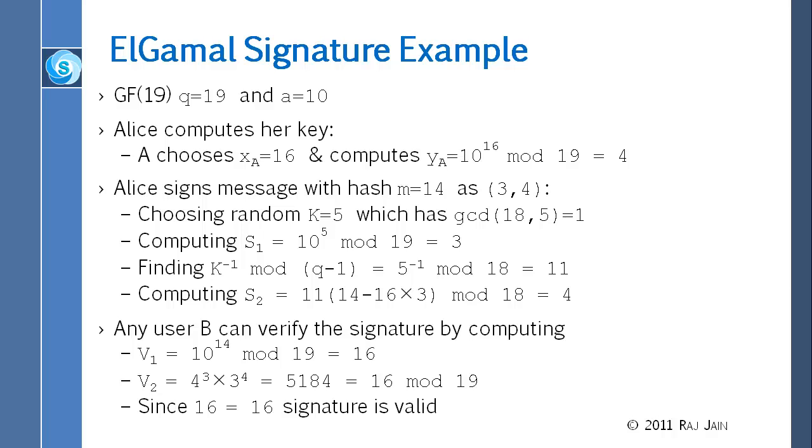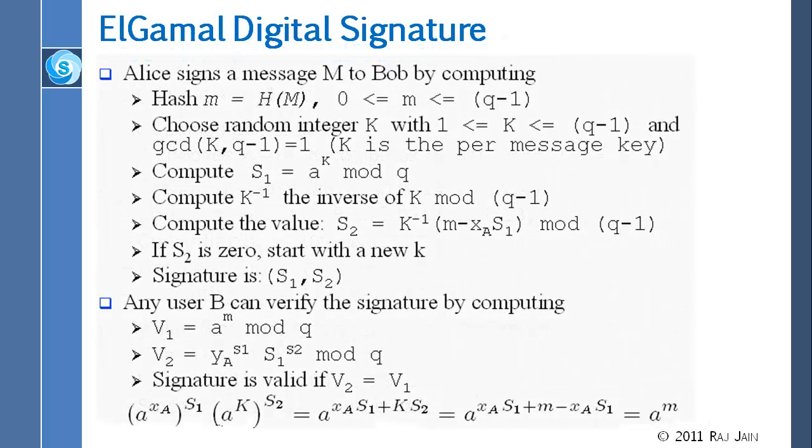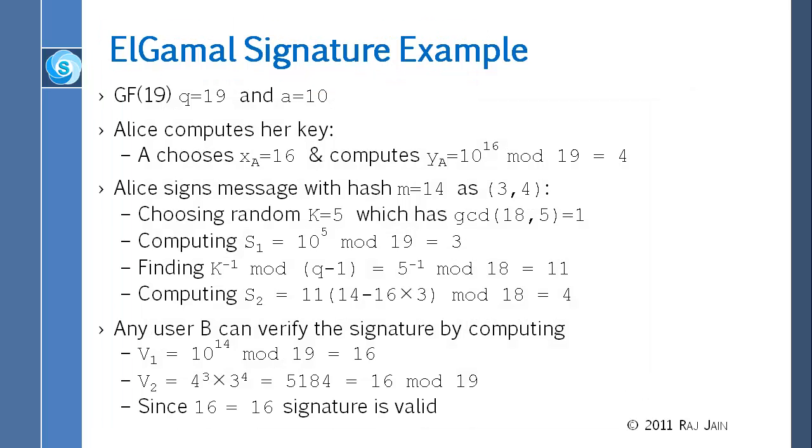Then to verify, you calculate V1, which is 10 raised to 14 mod 19, 10 raised to m, m is 14, which equals 16. And V2 is YA raised to S1 times S1 raised to S2. So YA is 4, raised to S1 is 3, times S1 is 3 raised to S2, which is 4. And you get 16.